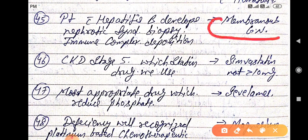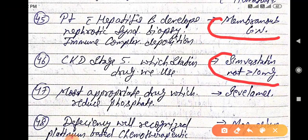CKD stage 5, which statin drug we use? CKD, chronic kidney disease stage 5, which statin drug we can use? Simvastatin, but not more than 10 mg.